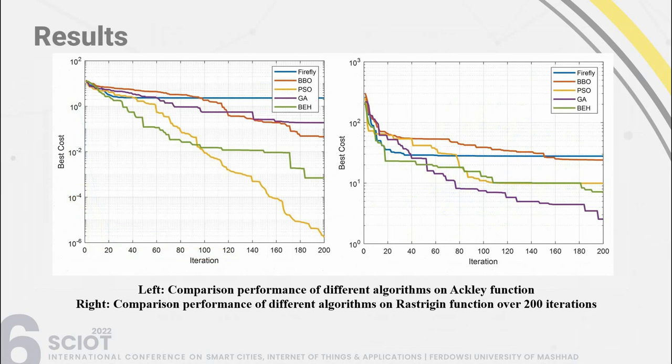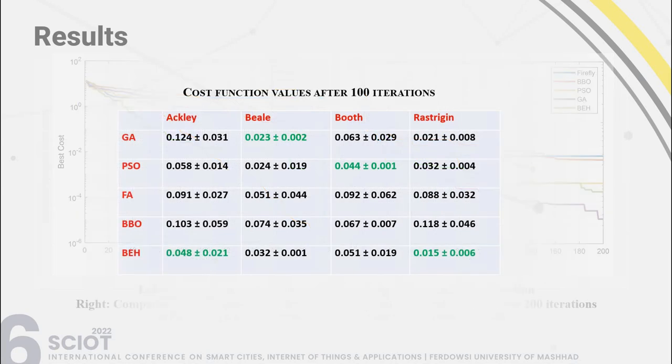On the left, comparison performance of different algorithms on the Ackley function is shown, and on the right, performance on the Rastrigin function over 200 iterations. For Ackley, PSO has better performance and our BEHA algorithm is in second place. For Rastrigin, genetic algorithm has better performance and our algorithm is in second place. On both, the firefly algorithm has the weakest performance. The table shows average and standard deviation of each algorithm on each function, where our algorithm has better performance on Ackley and Rastrigin, while BEHA shows better performance for Beale, and PSO better for Booth.